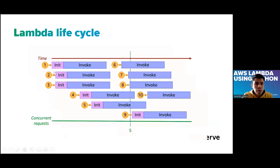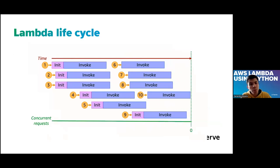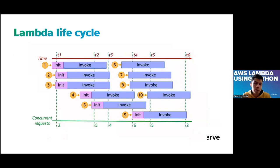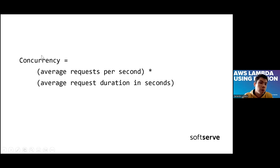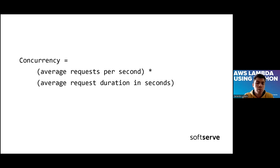We need to take into consideration the requests we receive, because based on traffic, the Lambdas that are going to be created scale accordingly. A simple formula is: average requests per second multiplied by the average request duration in seconds equals the concurrency of your service or endpoint. This way you can estimate how many Lambdas will be created in one second — this is important to remember.